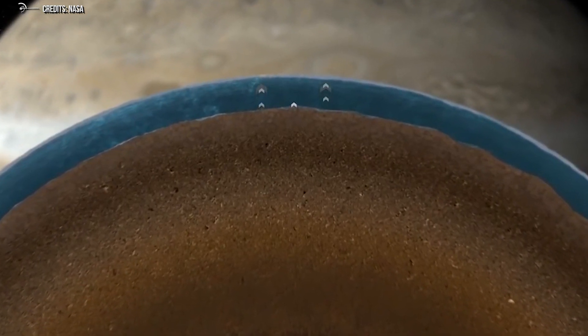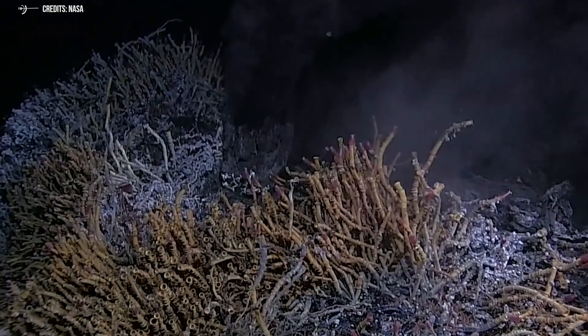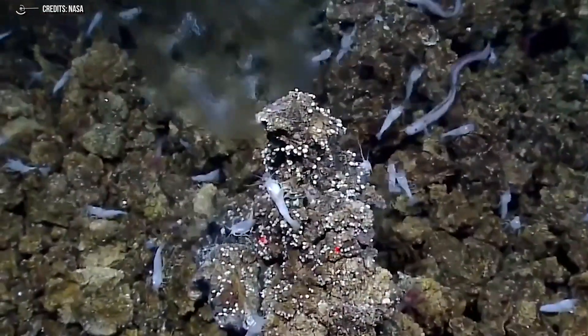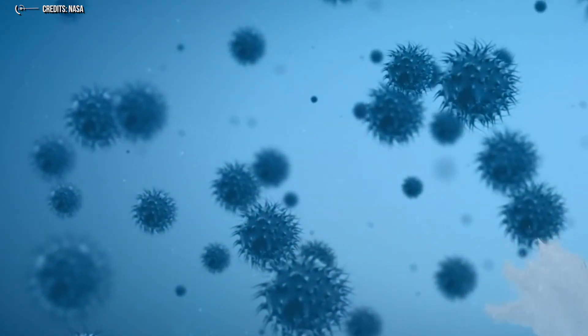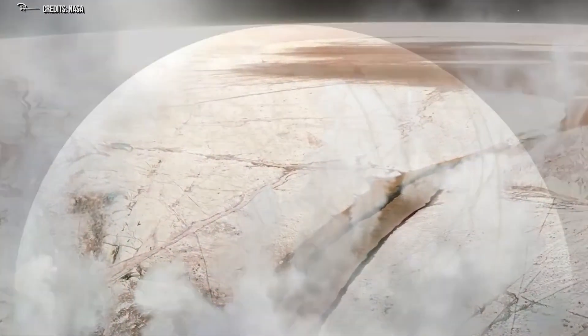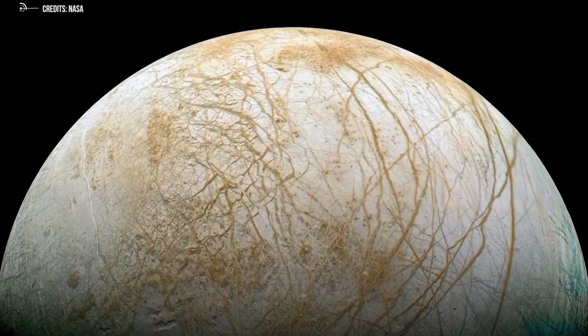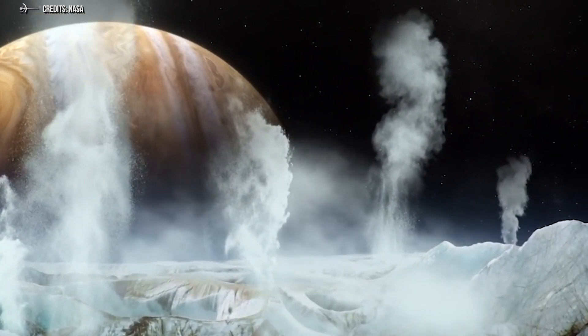Though Europa Clipper cannot directly detect life, it is designed to answer very specific questions about the plausibility of life on Europa. NASA always designs missions with big questions in mind, but they can only answer smaller specific questions. As a result, scientists are investigating various characteristics of Europa and doing simulations to fine-tune the questions that the expedition will need to ask. The spacecraft will enter Jupiter's orbit and perform approximately 50 close flybys. It is outfitted with highly sophisticated instruments: a mass spectrometer to investigate the contents of the surface ice, a magnetometer, radar to investigate the structures under the surface, and many more.